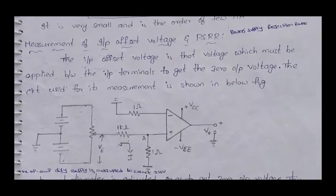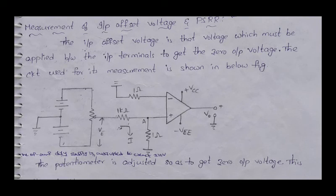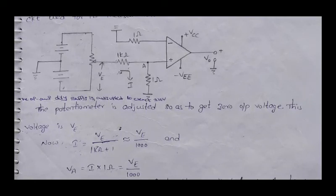Next, measurement of input offset voltage and PSRR — Power Supply Rejection Ratio. CMRR is the Common Mode Rejection Ratio and PSRR is the Power Supply Rejection Ratio. The input offset voltage is the voltage which must be applied between the two input terminals to get zero output voltage. It is the voltage that must be applied between the two input terminals of an op-amp to null the output.